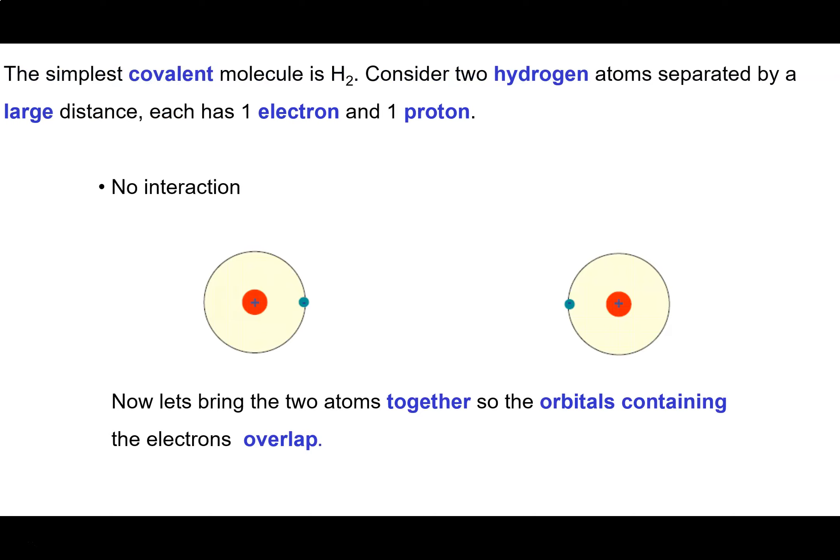The simplest covalent molecule is that formed between two hydrogen atoms. If we consider two hydrogen atoms separated by a very large distance, we would recognize that each hydrogen atom has one electron and a nucleus comprising one proton.